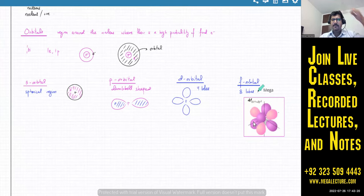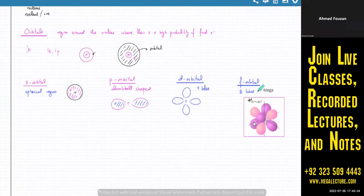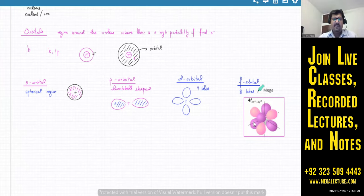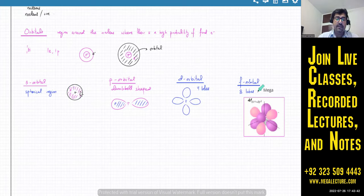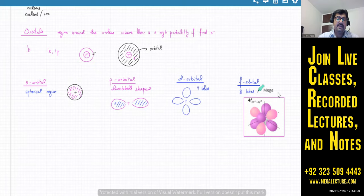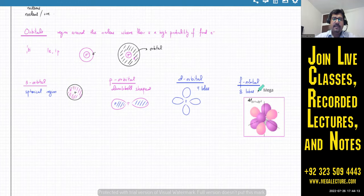To summarize: if the negative charge around the nucleus is spread over a spherical region, that's an s orbital. Two lobes means a p orbital. Four lobes is a d orbital. Eight lobes is an f orbital. The focus will be mainly on s and p orbitals. You will be asked to draw them. All of this is new material with many small concepts — pay close attention.